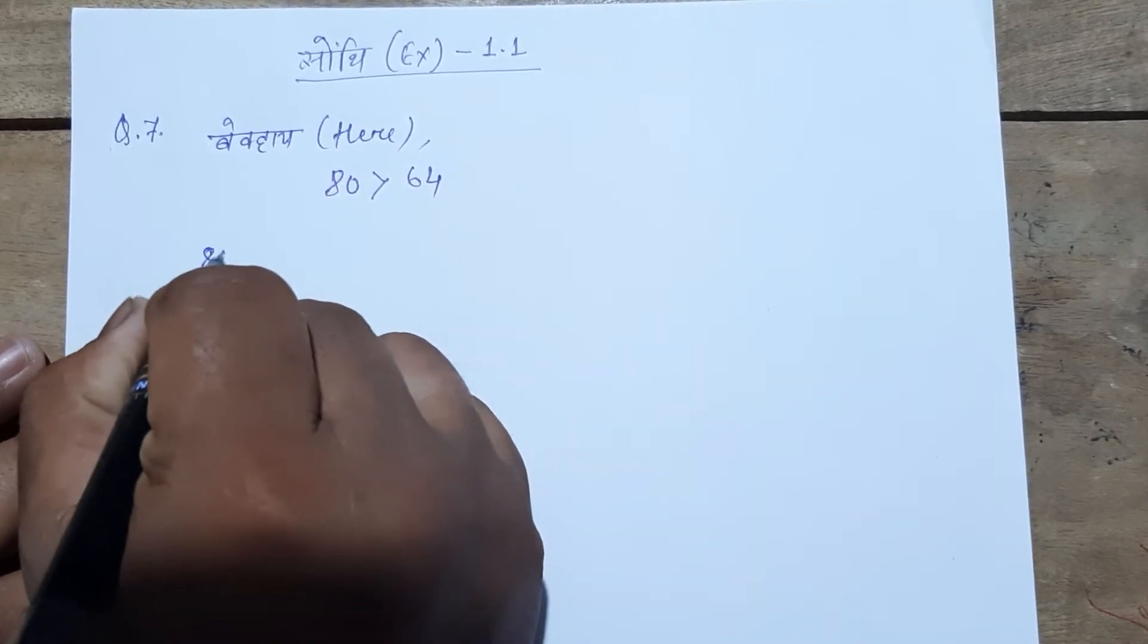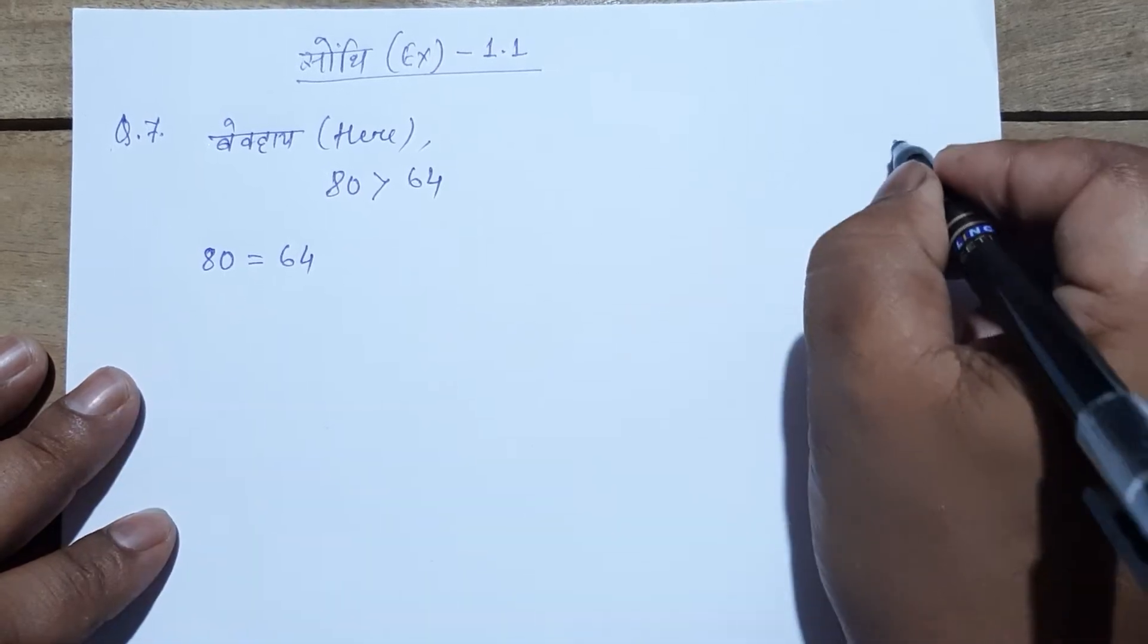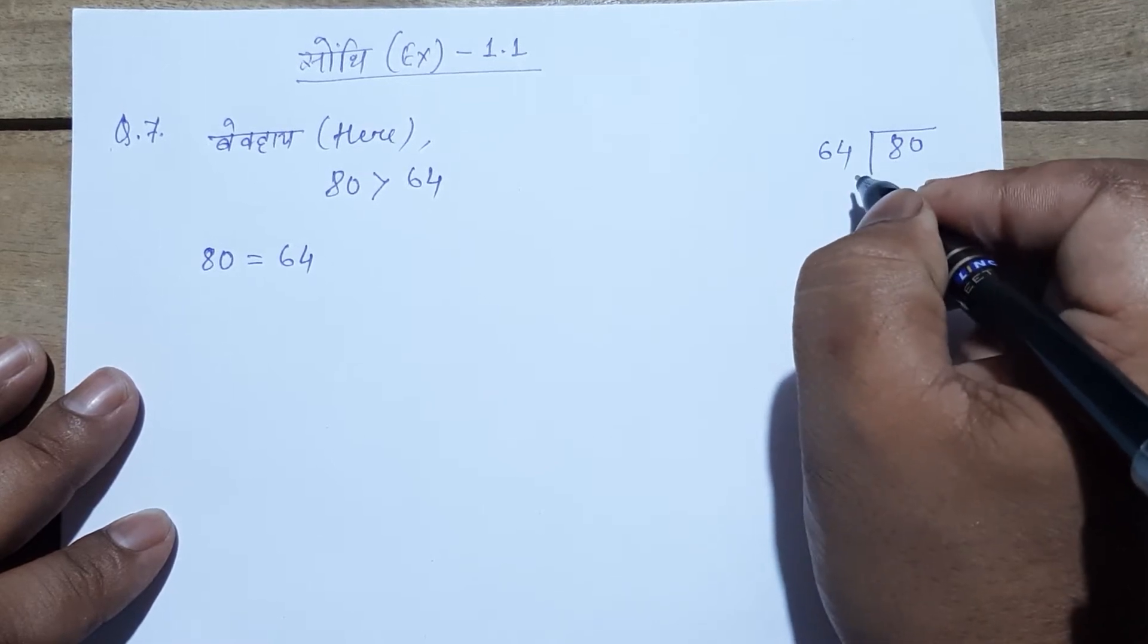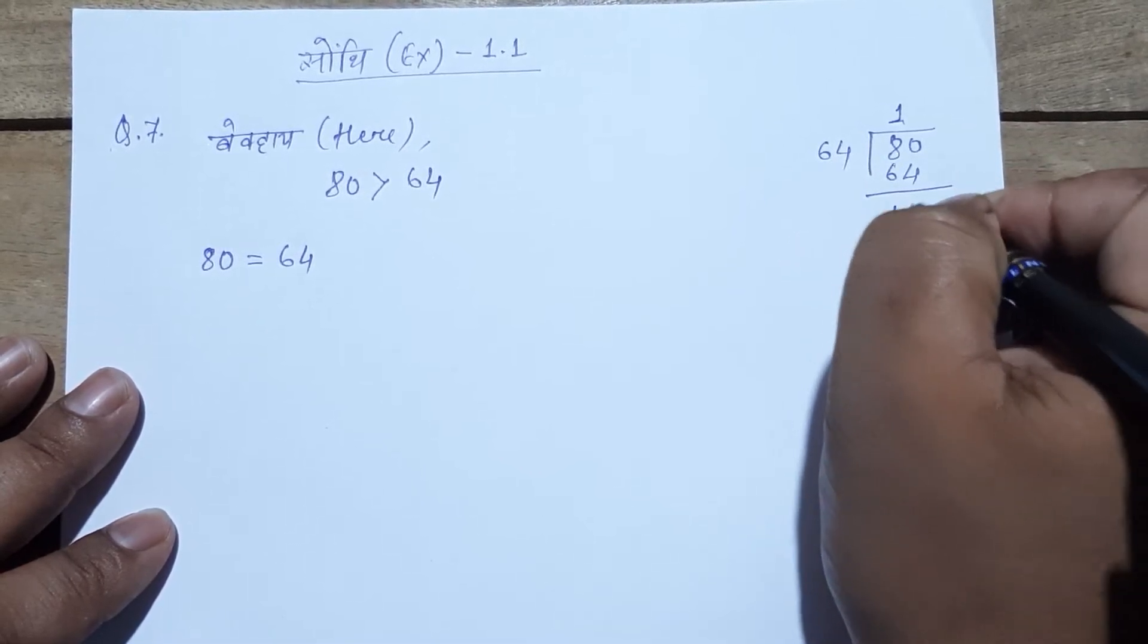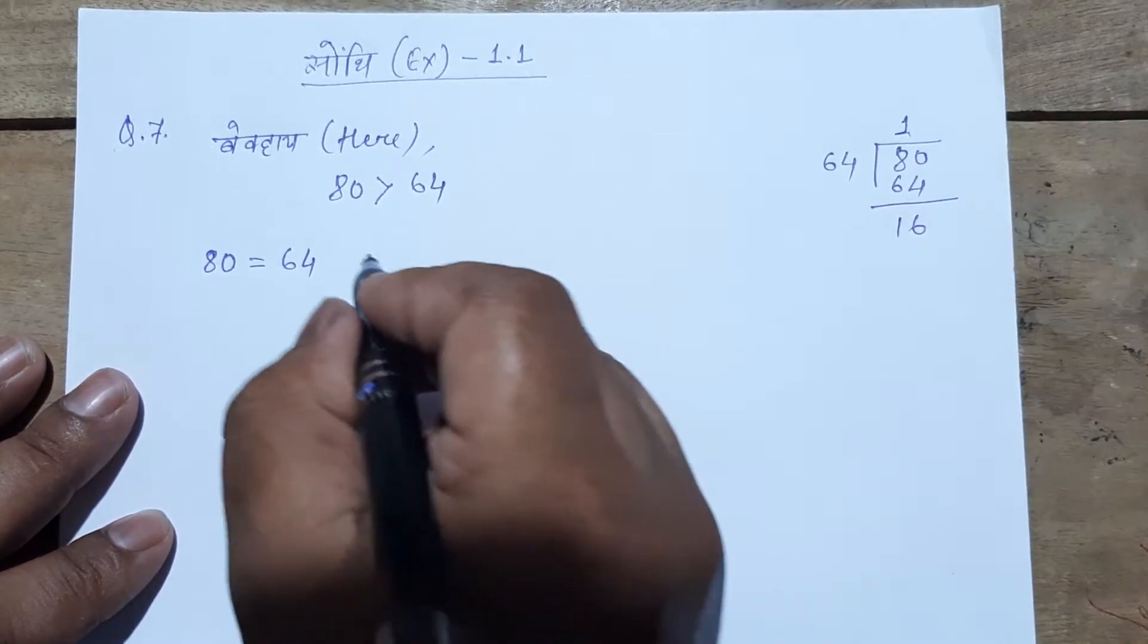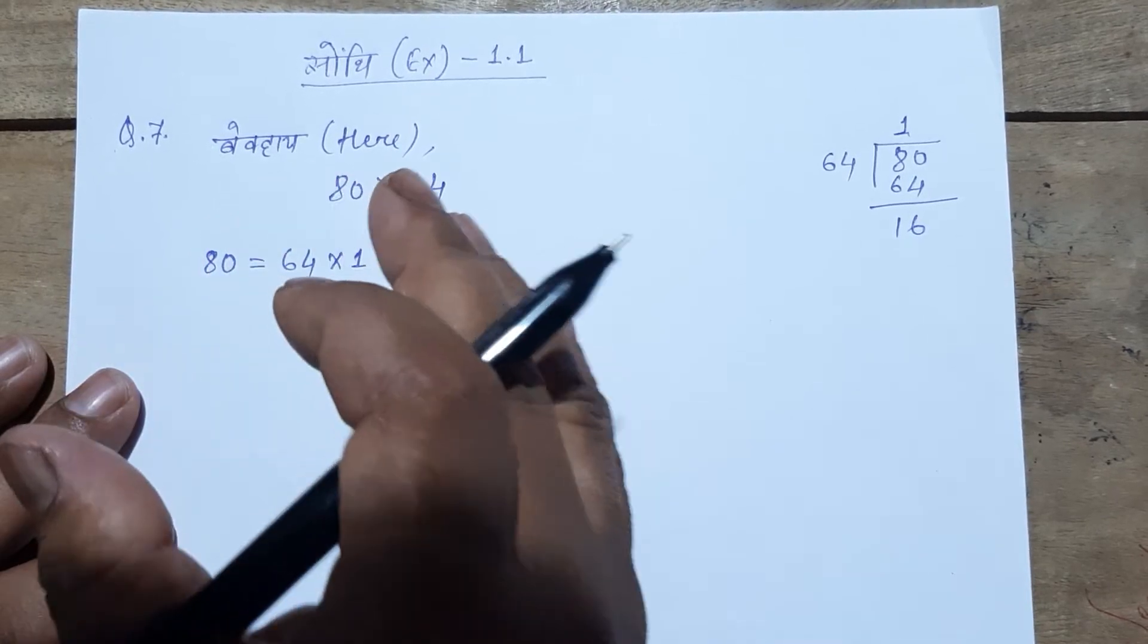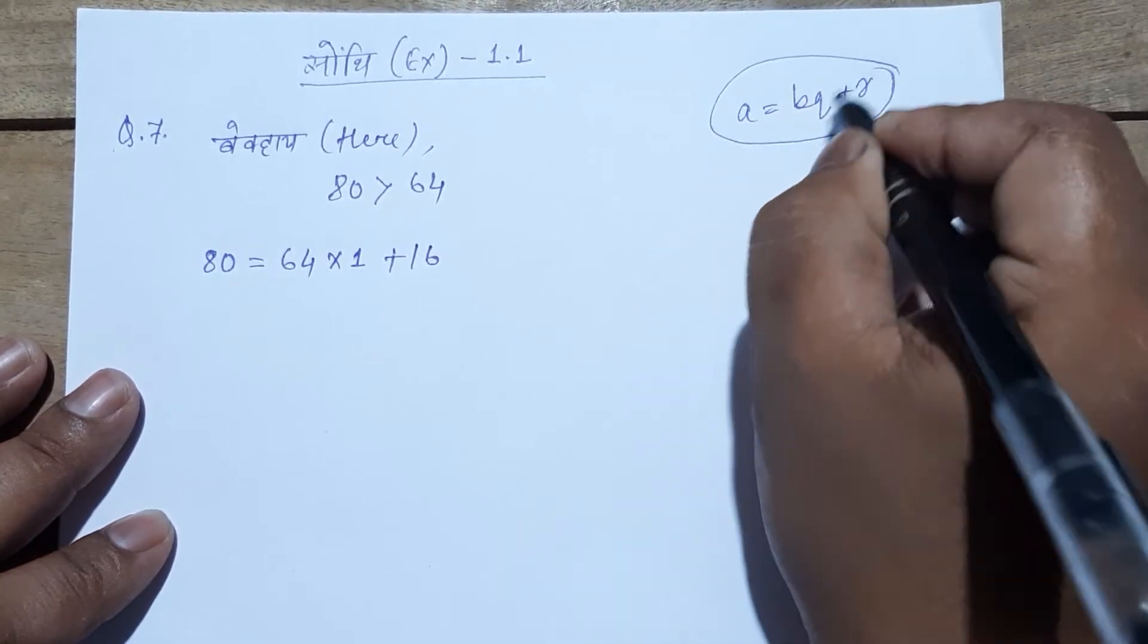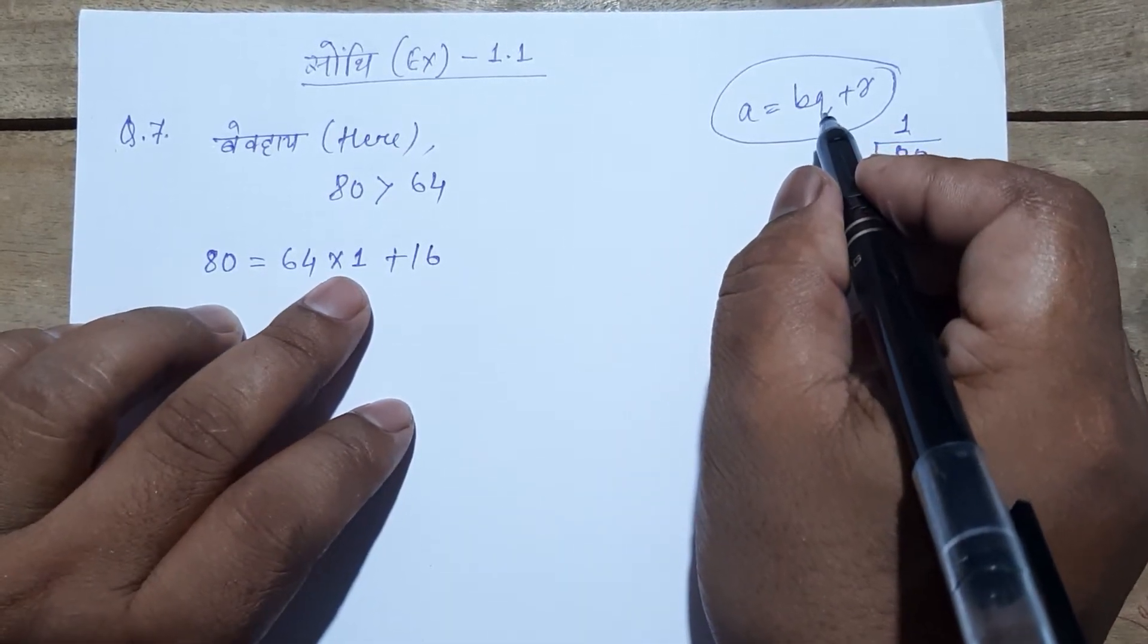The division algorithm is: A equals BQ plus R. A is equal to 80, B is equal to 64, Q is the quotient, and R is the remainder. So 80 equals 64 times 1 plus 16.